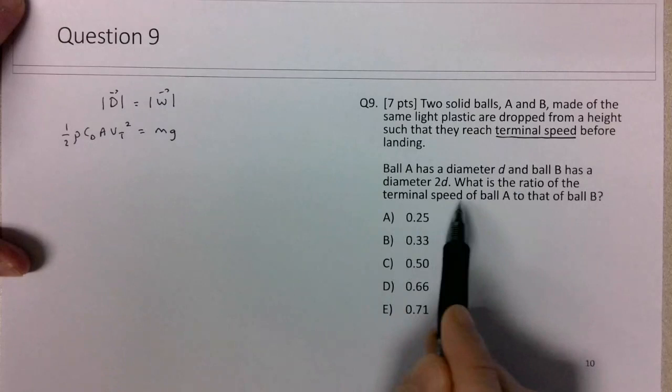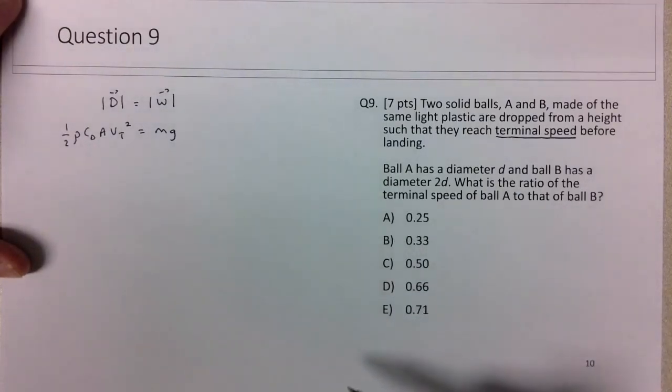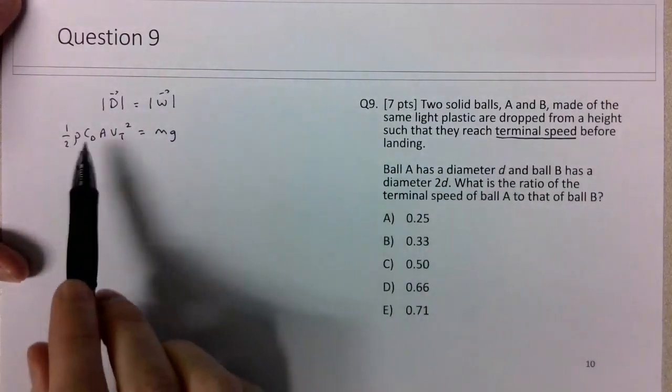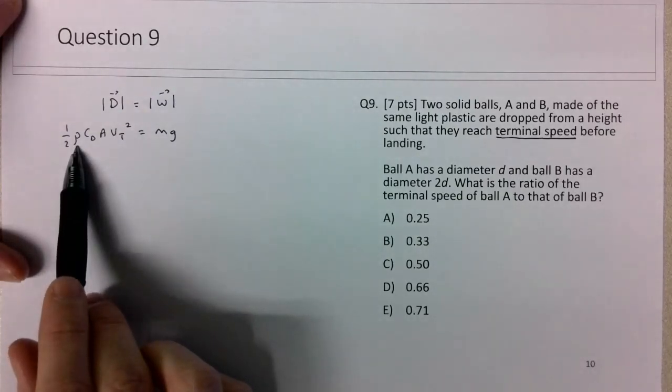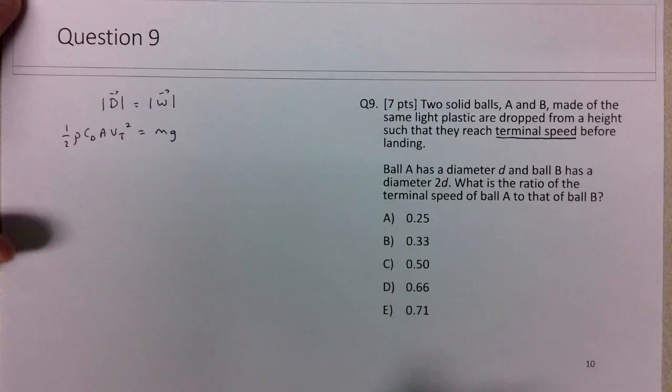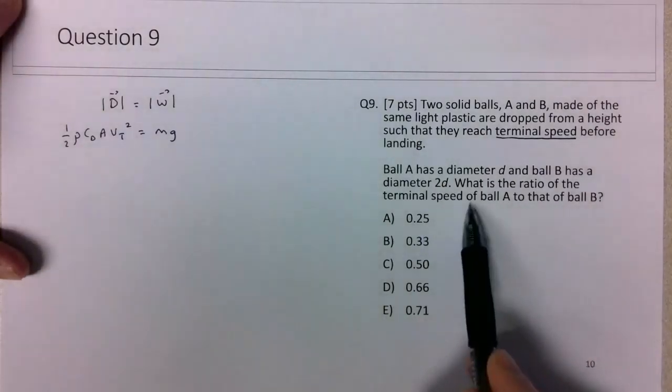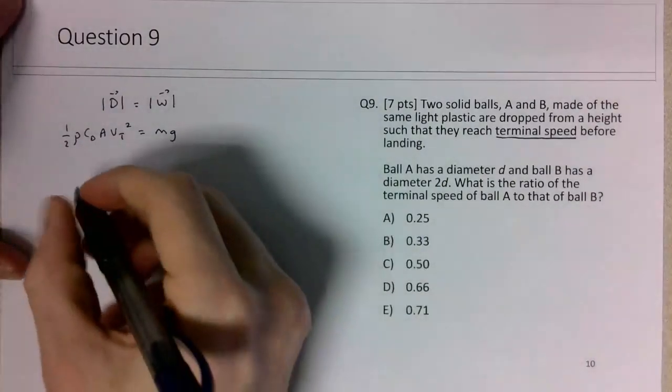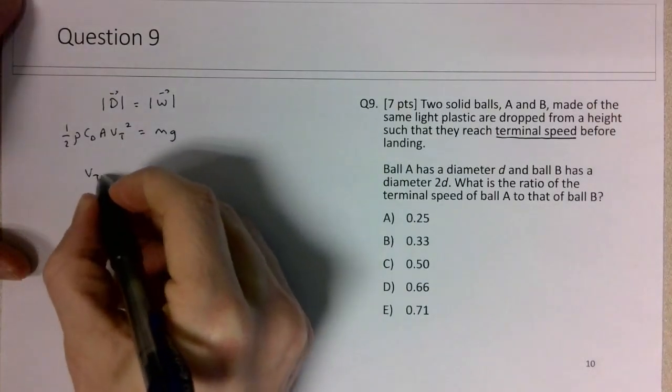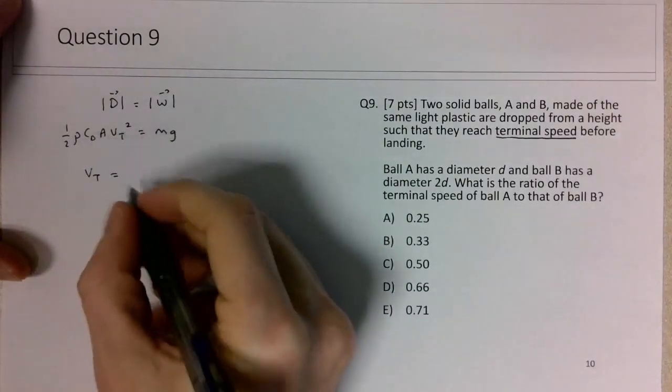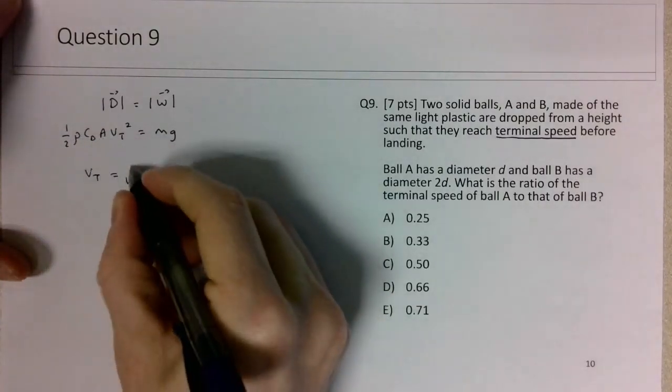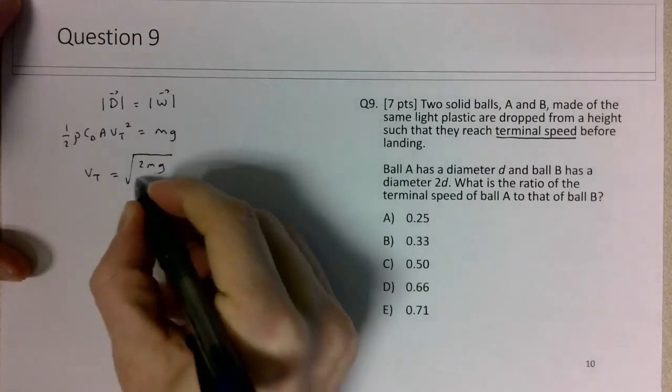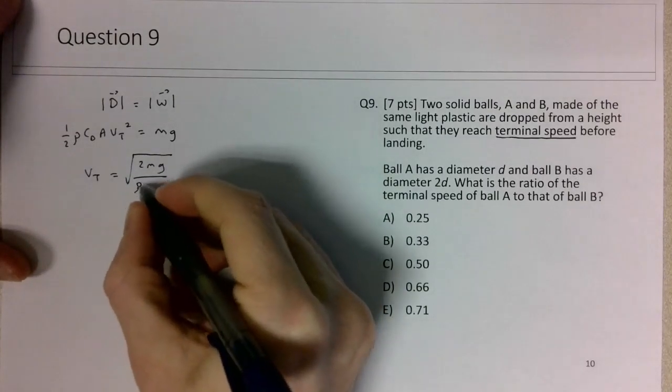We're looking for the ratio of the terminal speed of ball A to that of ball B. Since both spheres have the same drag coefficient and are in the same fluid (air), those quantities will cancel. Let's write this equation in terms of vt. Taking the square root of both sides, multiplying by 2, and dividing by ρ cd A, I get vt = √(2mg/ρcdA).